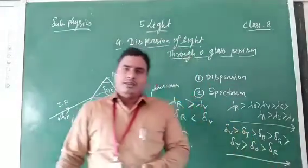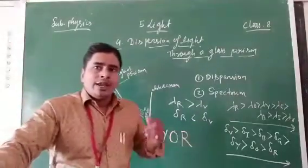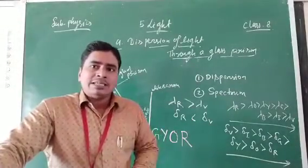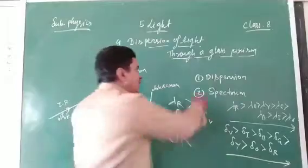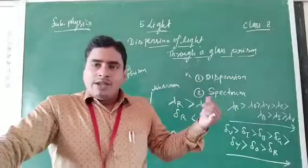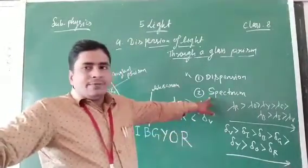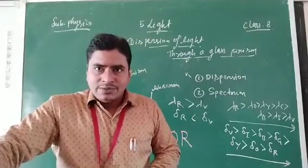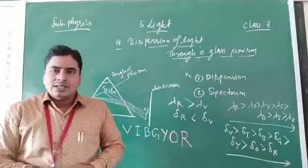Finally we can conclude that when white light passes through the glass prism and emerges out, refraction and dispersion take place, and the white light is split into 7 colors. We can define this phenomenon — dispersion — as: the phenomenon of white light splitting into its constituent 7 colors when passing through a glass prism. The band of these 7 colors obtained on a screen is called the spectrum.